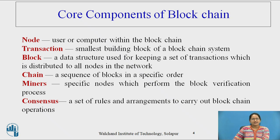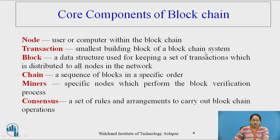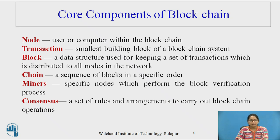Let us see what are the core components of a blockchain. Node: a user or computer within the blockchain. Transaction: the smallest building block of a blockchain system. Block: a data structure used for keeping a set of transactions, which is distributed to all nodes in the network. Chain: a sequence of blocks in a specific order. Miners: specific nodes that perform the block verification process. Consensus: a set of rules and agreement to carry out blockchain operations.